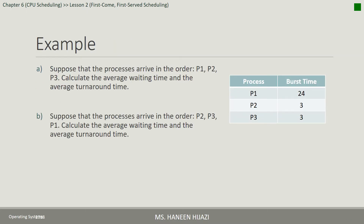Example: فرضاً عندنا ثلاث بروسسيز: P1، P2، P3. الـ burst time إلهم — الوقت اللي بتقضيه الـ process على الـ CPU — P1: 24، P2: 3، P3: 3. فرضاً وصلوا على الـ CPU بنفس الوقت. بدنا نحسب الـ Average Waiting Time والـ Average Turn Around Time إذا وصلوا بالـ order: أول إشي P1، بعدين P2، وبعدين P3.